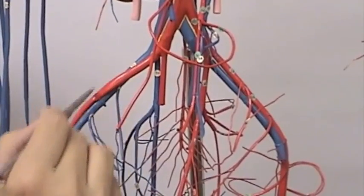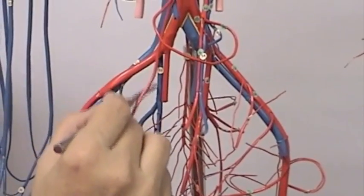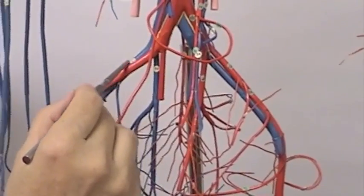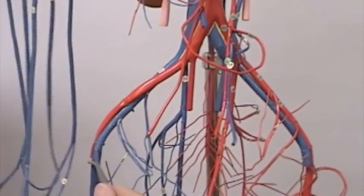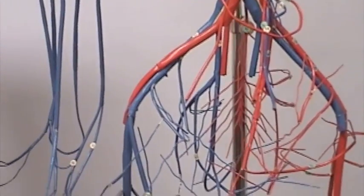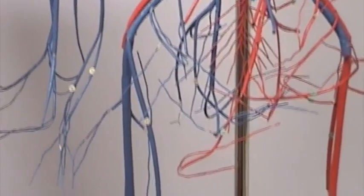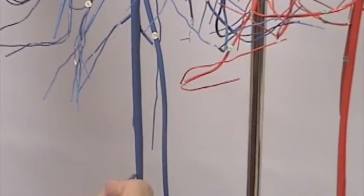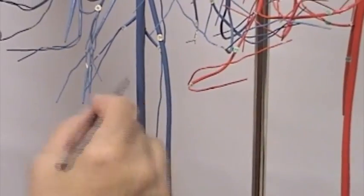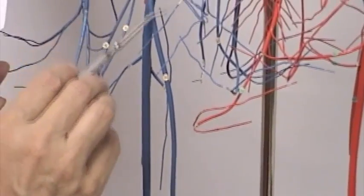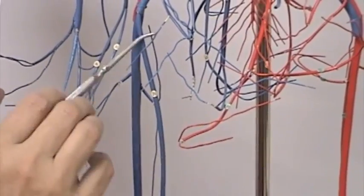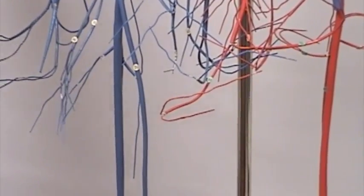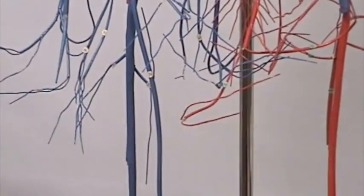The internal iliac runs a little more superficially, and the external iliac runs deep. If you follow the external iliac down, it becomes the femoral vein in the leg — this primary one right along here. There is also a superficial vein called the greater saphenous vein, and that's important in bypass surgery for the heart.